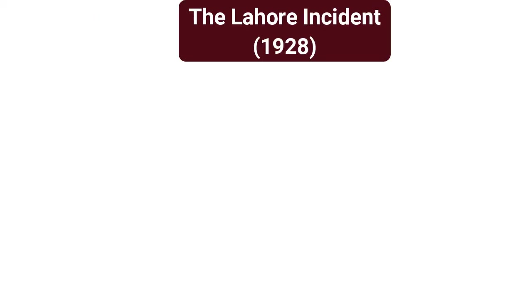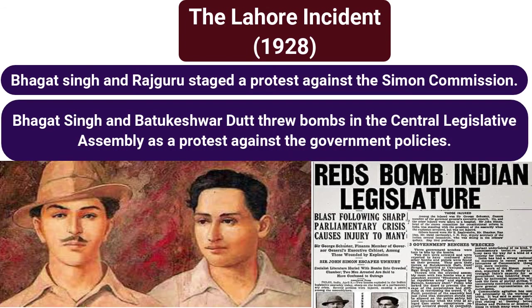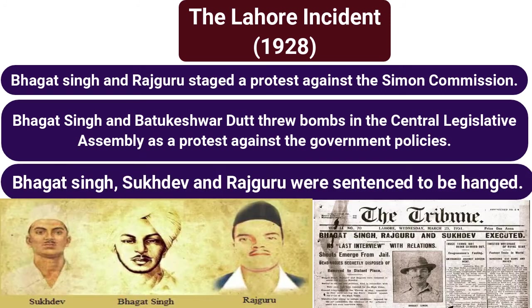The Lahore Incident in 1928. Bhagat Singh and Rajguru staged a protest against the Simon Commission. Bhagat Singh and Batukeshwar Dutt threw bombs in the Central Legislative Assembly as a protest against government policies. Bhagat Singh, Sukhdev, and Rajguru were sentenced to be hanged.